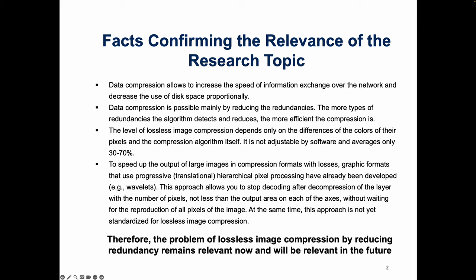The level of lossless image compression depends only on the differences of the colors of their pixels and the compression algorithm itself. It is not adjustable by software and averages only 30–70%. To speed up the output of large images, compression formats with lossless graphic formats that use progressive hierarchical pixel processing have already been developed.